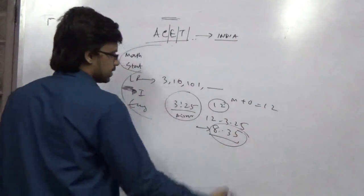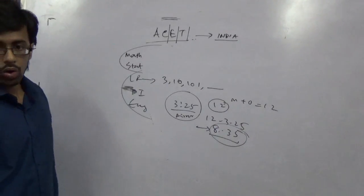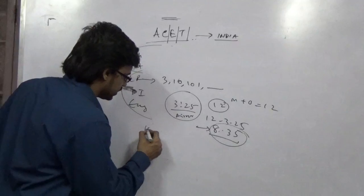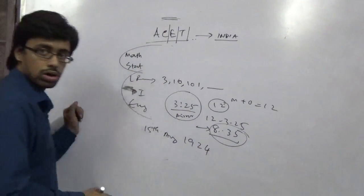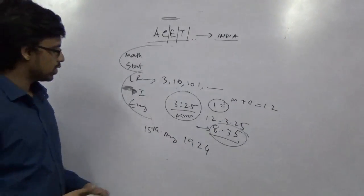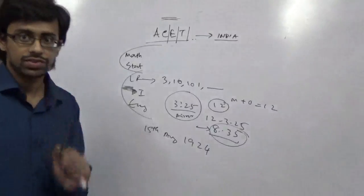This is the original. AM PM doesn't matter. So this kind of clock problems. Or they may ask you what was the day of 15th August 1924. You can find it out using some formulas.